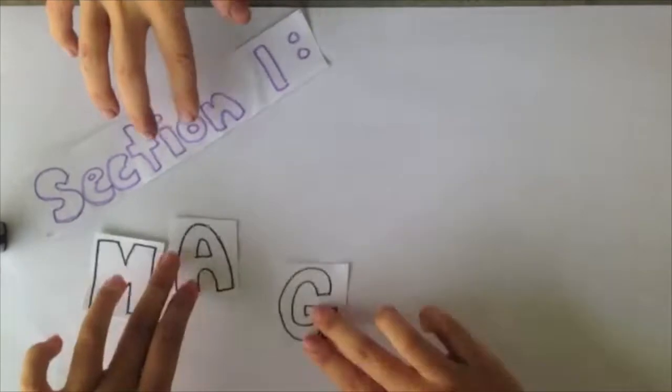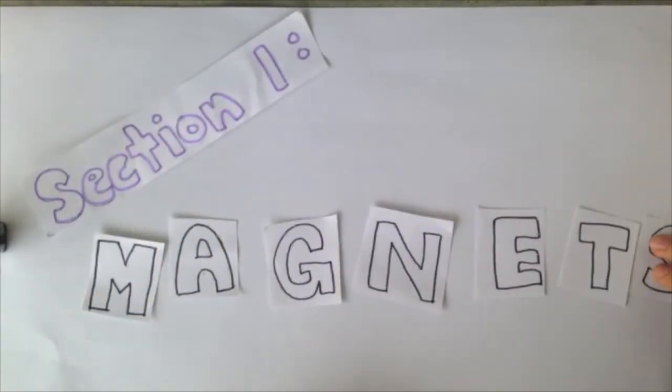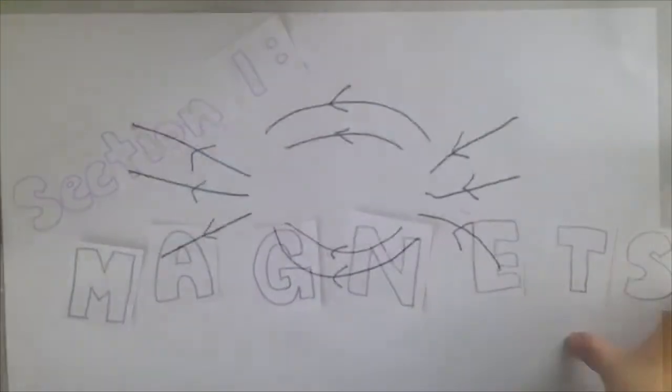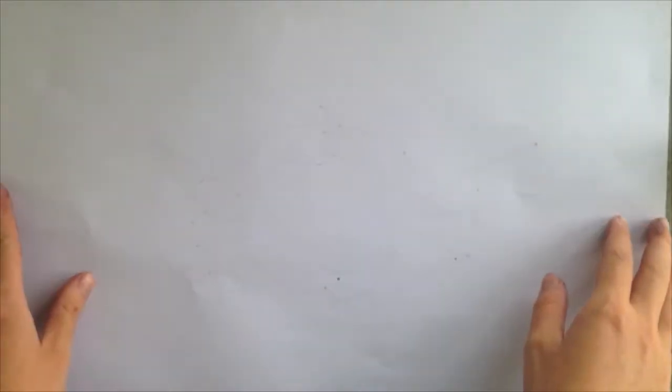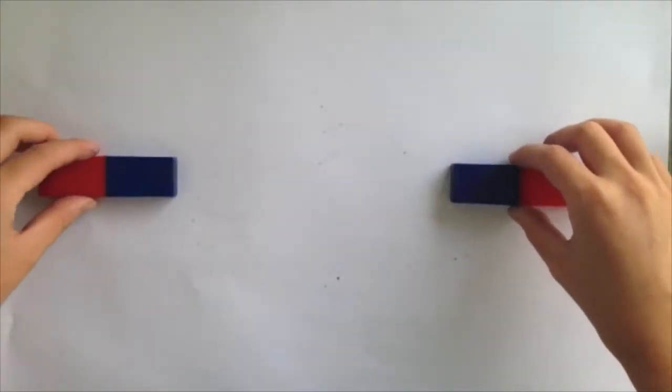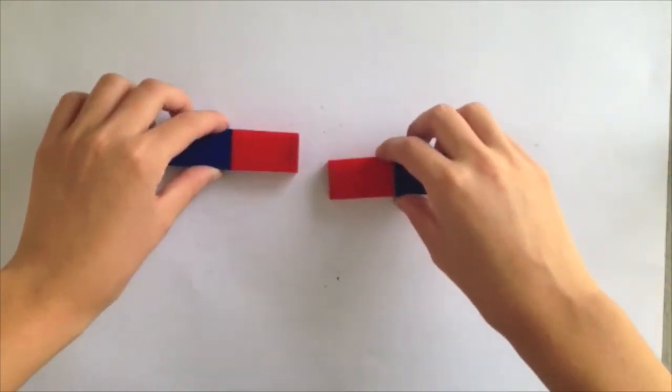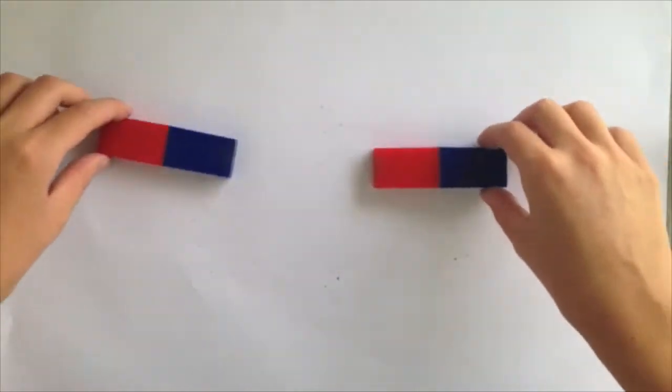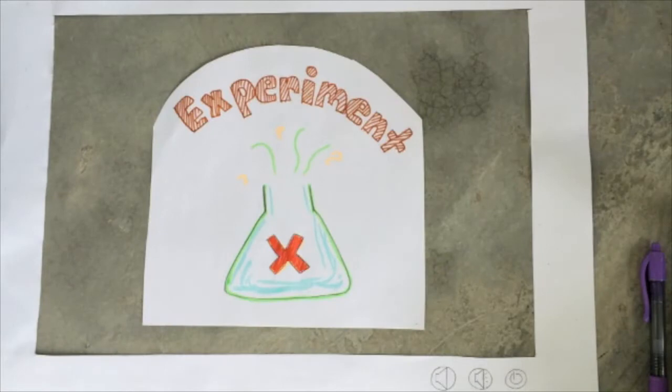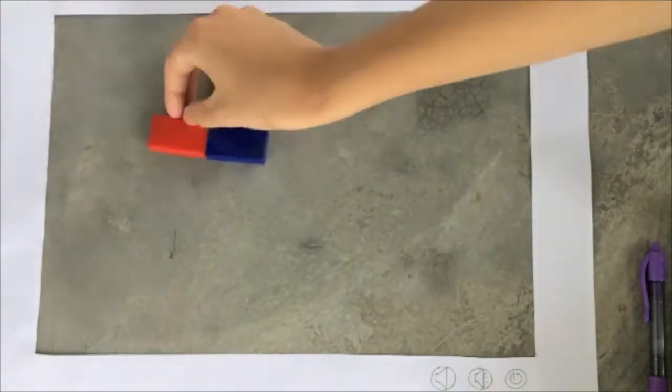Section one: magnets. When two of the same ends of a magnet are put together they repel, but when one side is different they attract. Time for an experiment. This experiment is to find a magnetic field around a magnet.